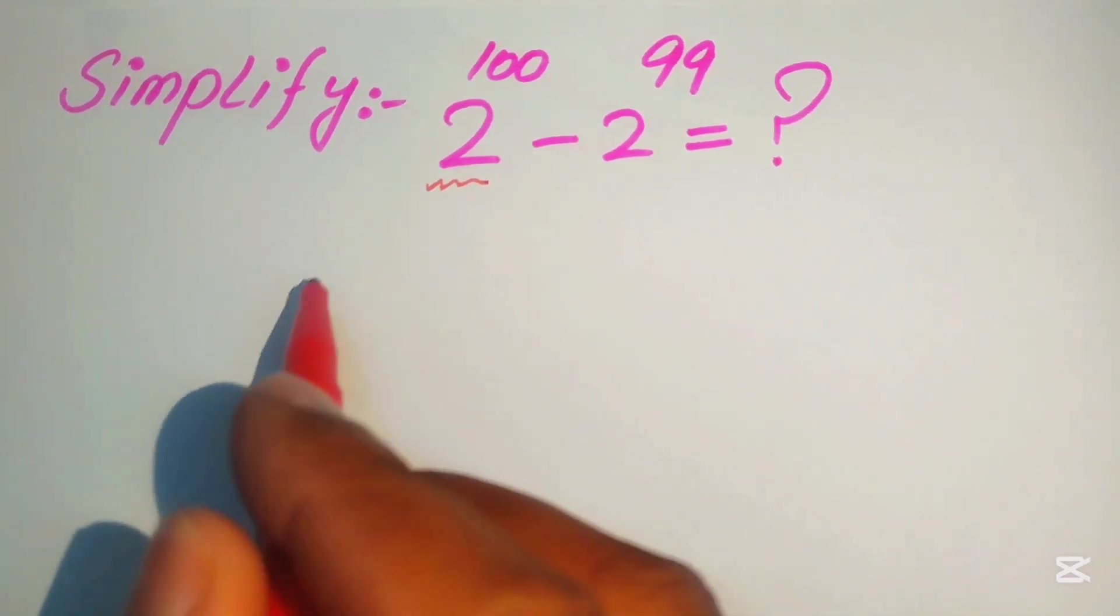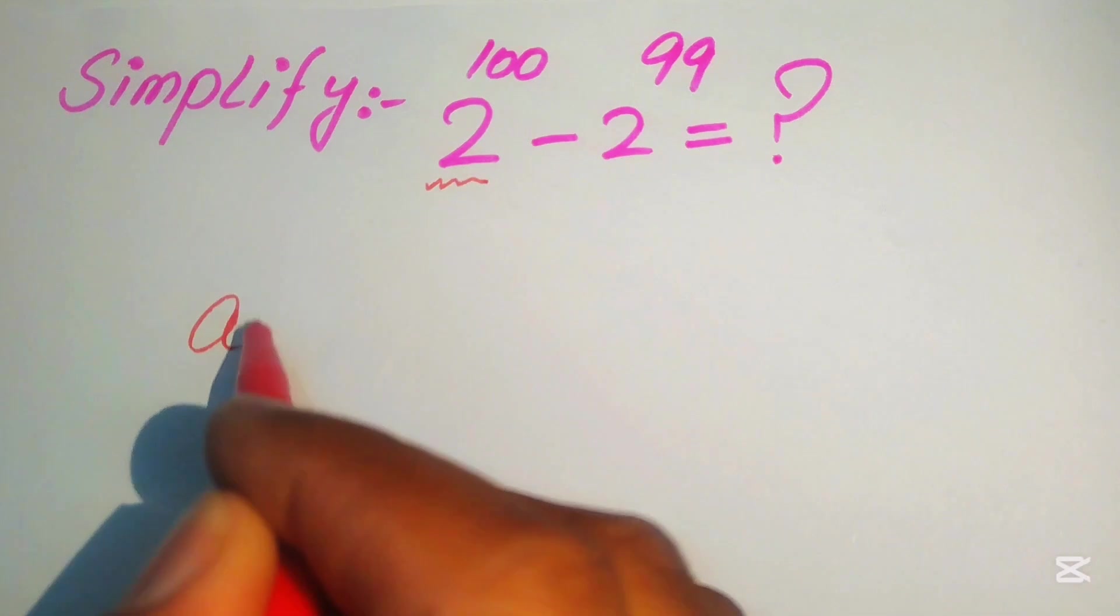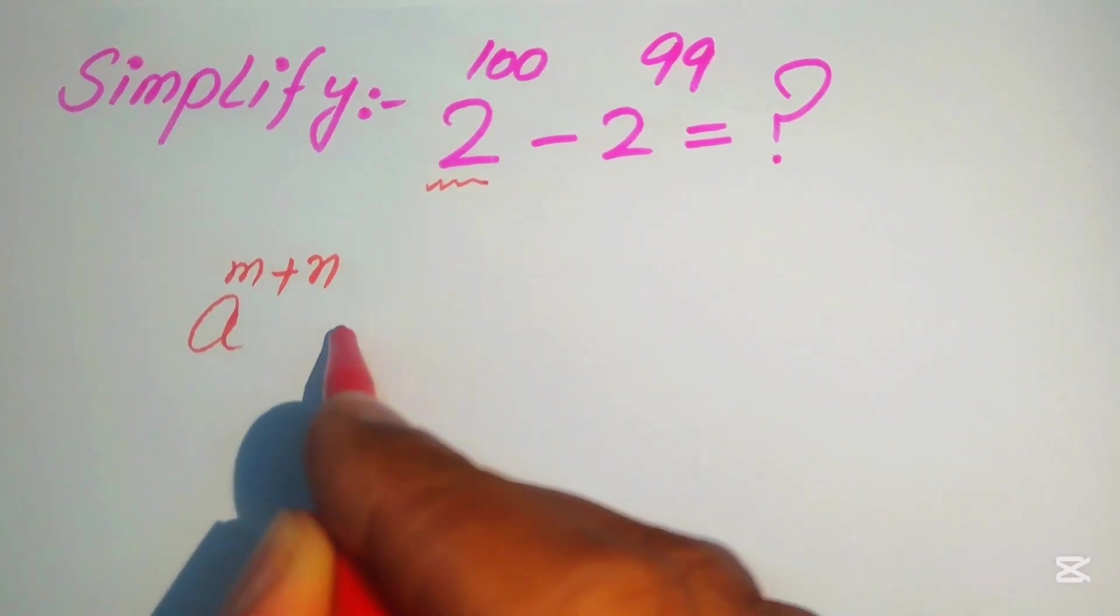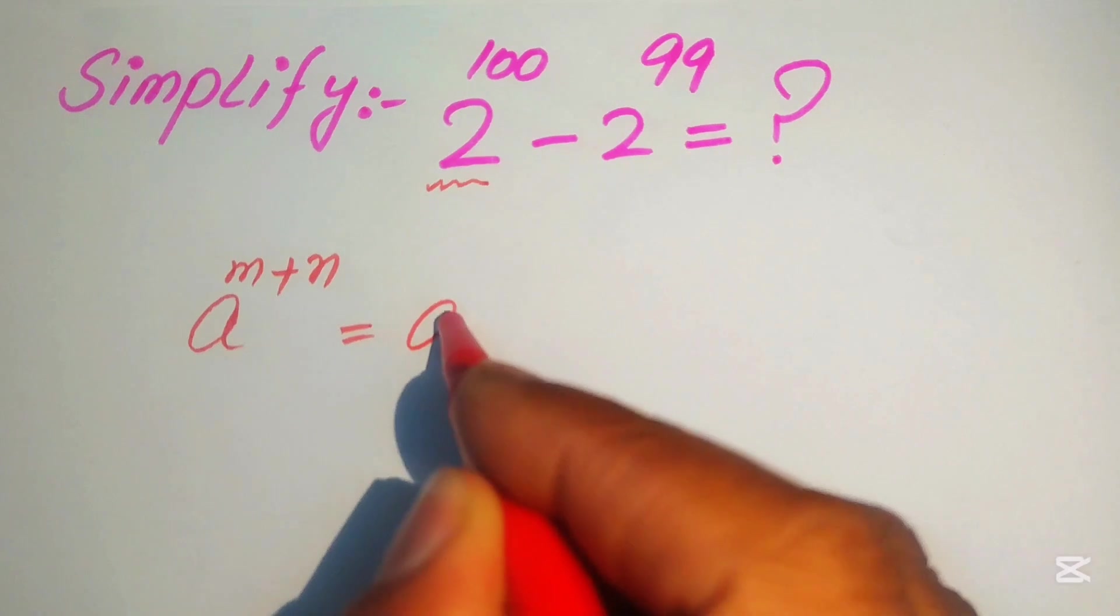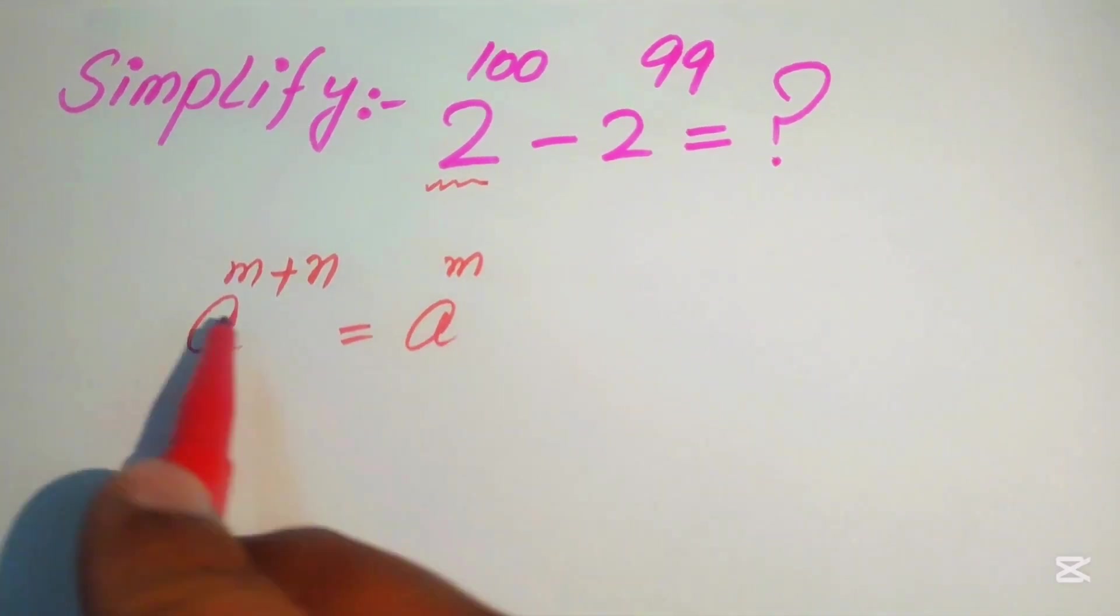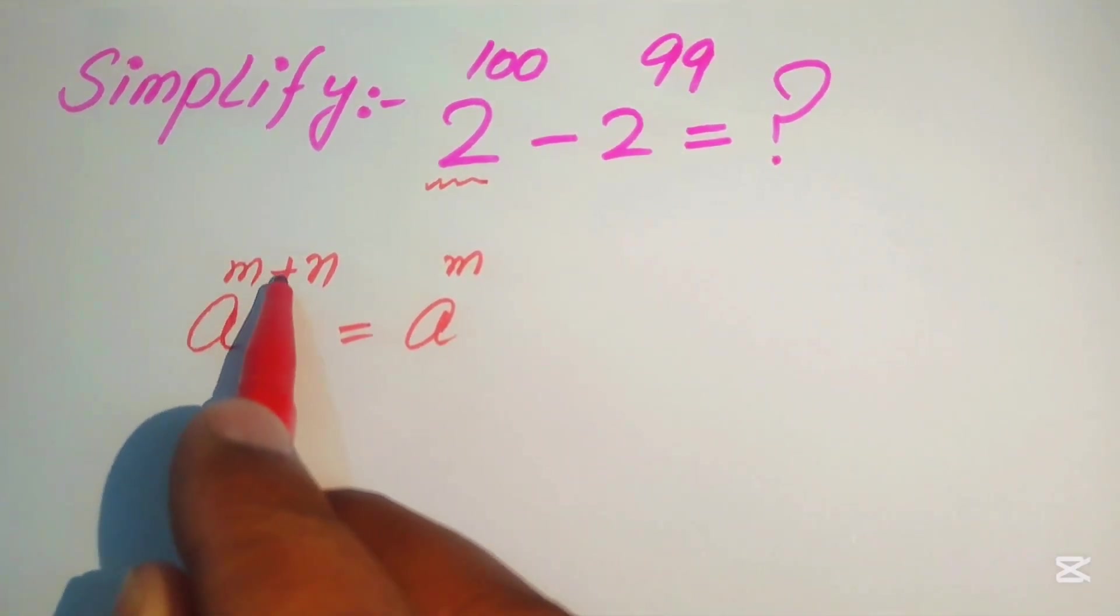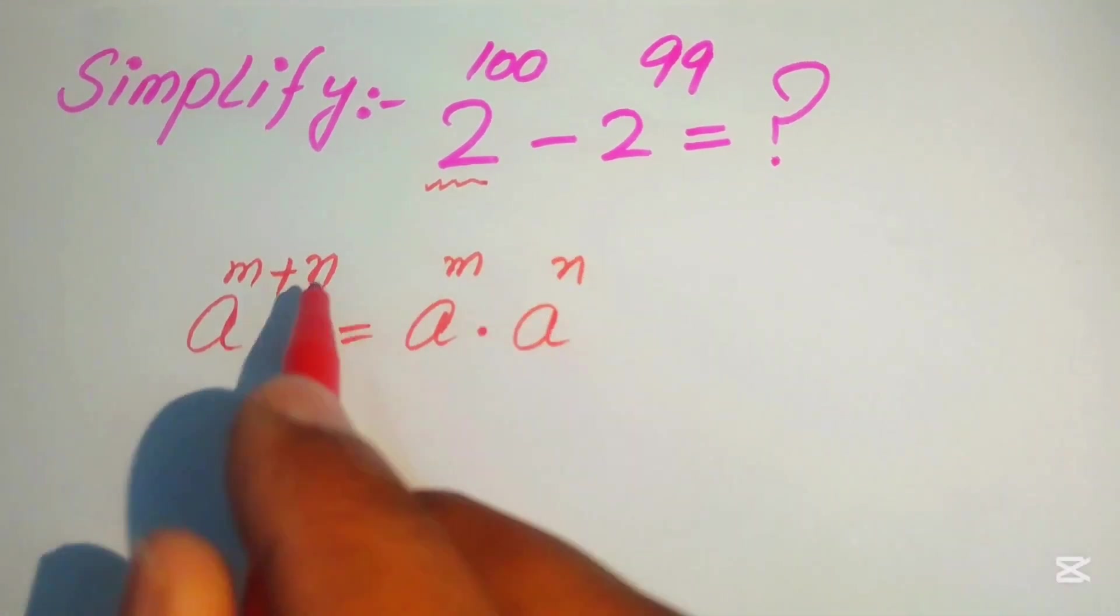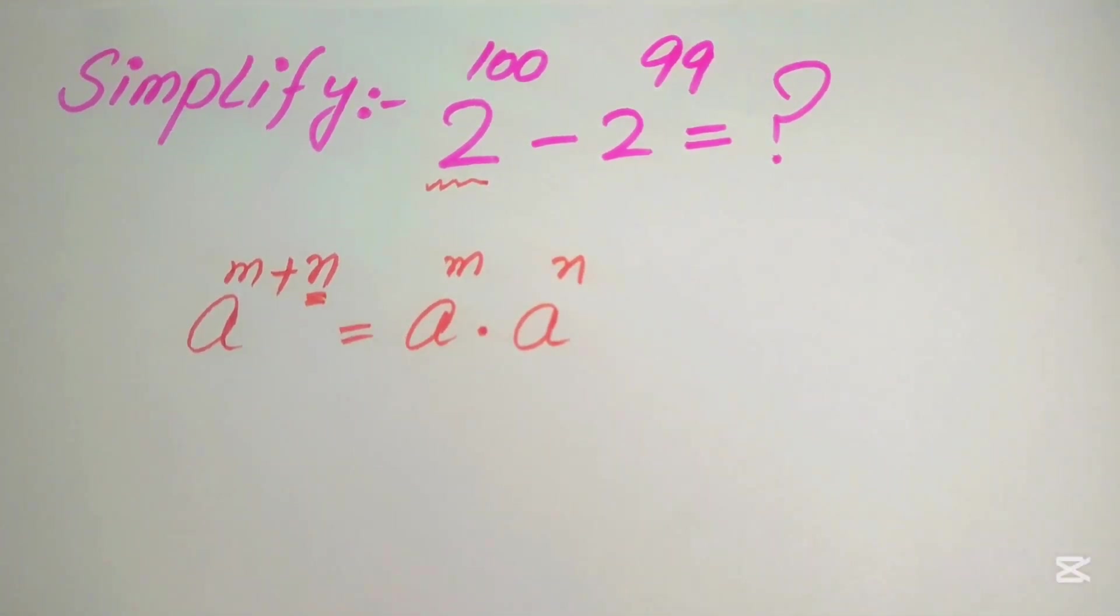So here we know about this rule: if we have a to the power of m plus n, we write this as a to the power of m multiplied by a to the power of n.